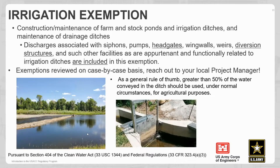The irrigation exemption covers construction or maintenance of farm and stock ponds and irrigation ditches, or the maintenance of drainage ditches. Also included are discharges associated with siphons, pumps, head gates, swing walls, weirs, diversion structures, and other facilities pertinent and functionally related to the irrigation ditch. A common feature is a diversion structure — water is diverted to the ditch, but the river is still able to flow through. It's not choking off the river; it's not reducing the reach, and the river is still able to flow to its ultimate destination.